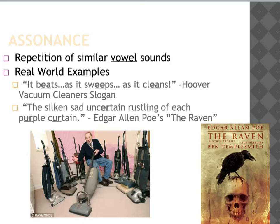Assonance is the repetition of similar vowel sounds. This only focuses on your a, e, i, o's and u's and your y's. This could be if you say 'eat, sleep, and breathe' — you're repeating the 'eep' sound, the harsh e sound in each of those words. Some real-world examples are usually seen in poetry or in slogans, because assonance is sometimes hard to recognize.